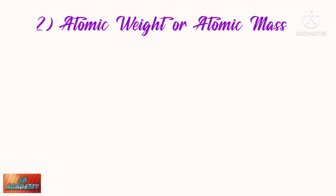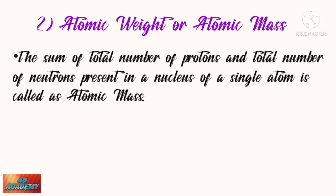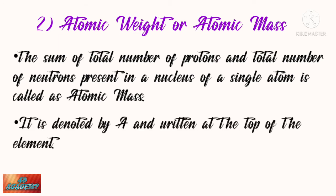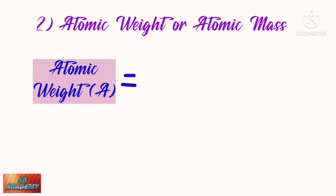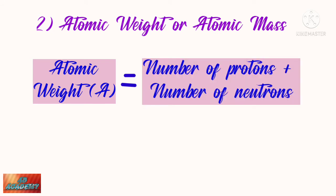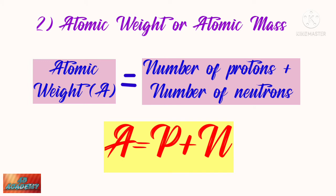Then we will see atomic weight or atomic mass. The sum of total number of protons and total number of neutrons present in a nucleus of a single atom is called atomic mass. It is denoted by A and written at the top of the element. The formula is: atomic weight equals number of protons plus number of neutrons. The overall formula is A equals P plus N.